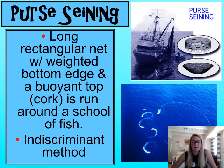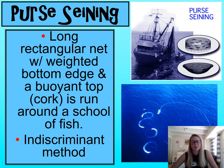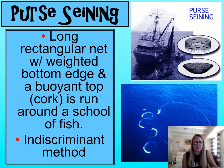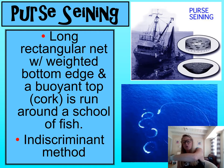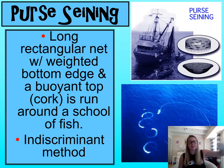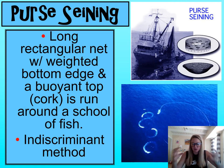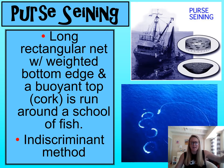Our first commercial fishing method is called purse seining. The boat finds a school of fish and drops a net in the water. The top of the net has a buoy to keep it afloat and the bottom has a weight. They drop the net and circle around the school of fish. Once they've completely encircled the school, they pull a line that encloses the net into a drawstring bag, trapping all the fish so they can be pulled up onto the boat.